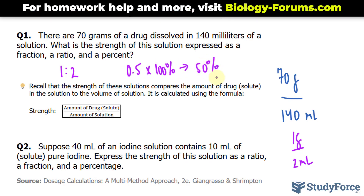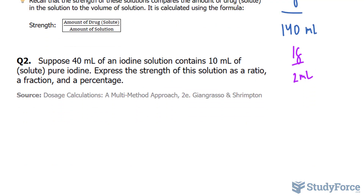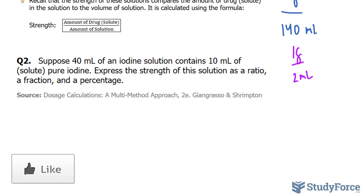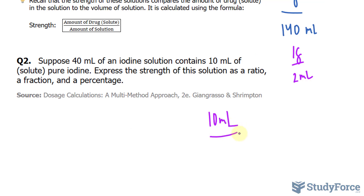Therefore, the strength of the solution is 50%. Let's continue on with question 2. This time we're asked: suppose 40 milliliters of an iodine solution contains 10 milliliters of solute, which is pure iodine. Express the strength of the solution as a ratio, a fraction, and a percentage. We have 10 milliliters of solute, and we're dividing this by the total solution, which is 40 milliliters.